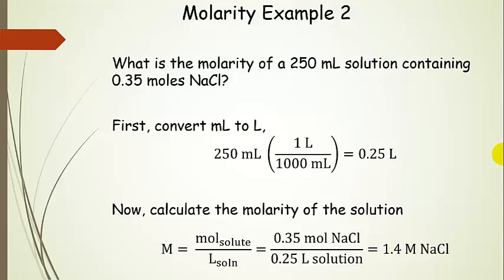You should get to the point where you're doing this in your head — 250 milliliters is a quarter of a liter. Now let's calculate the molarity. Once we have our liters of solution, take our moles of solute, which is 0.35 moles, and divide by our liters of solution, 0.25. We get 1.4 molar sodium chloride. Checking sig figs: we have two sig figs in 0.35 and two in 0.25, so two sig figs in our answer is perfect.